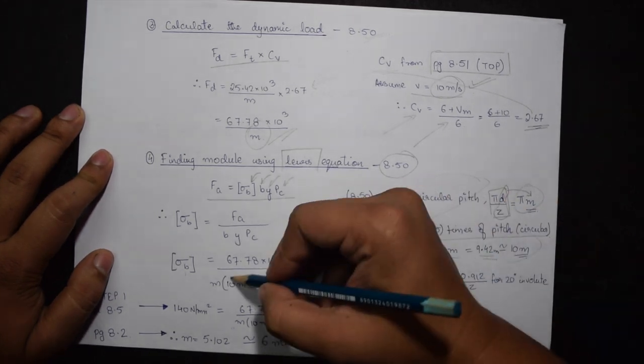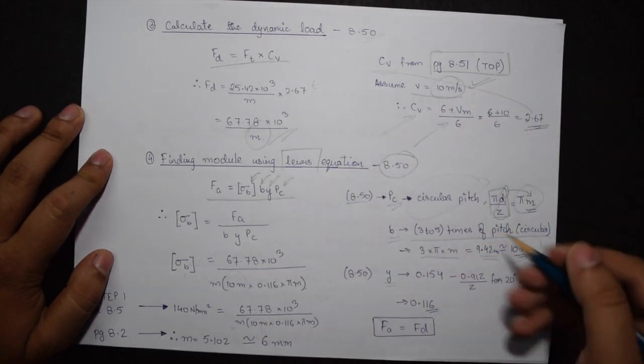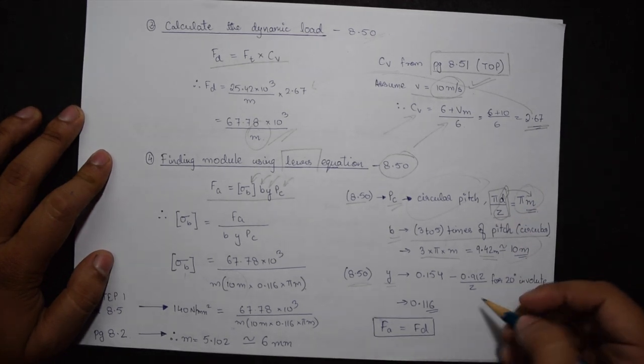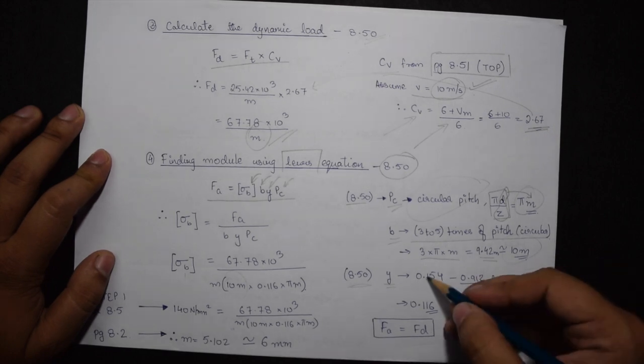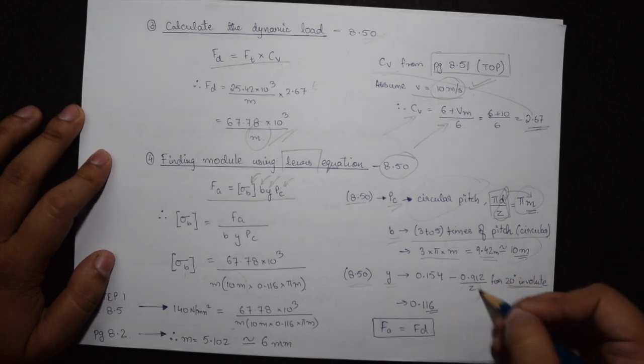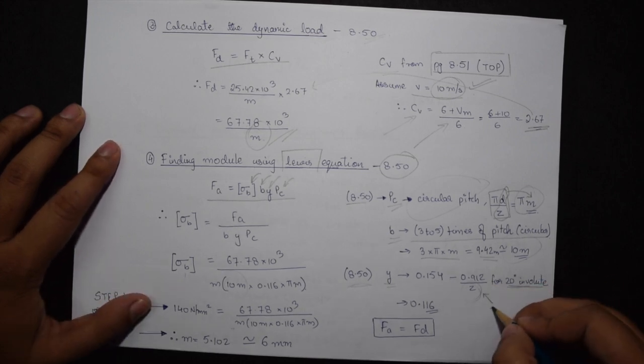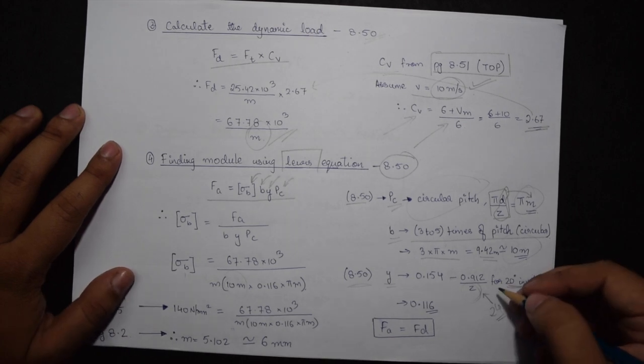For calculation of Y, this is given on page 8.50 bottom right side. For 20 degree involute, value 20 was given in our question, we have the formula 0.154 minus 0.912 divided by Z. Now the value of Z is 24 given in the question.